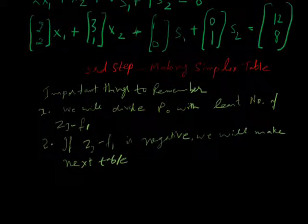We are taking step 3. In step 3 we have to make a simplex table. Before making simplex table we need to remember two things: first, we will divide P0 with the least number of ZJ minus F1, and second, if ZJ minus F1 is negative, we will make a next table.